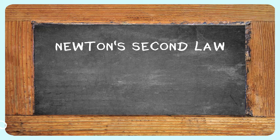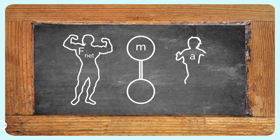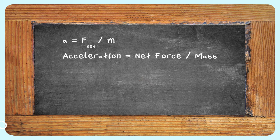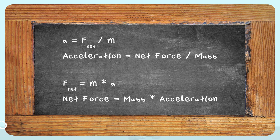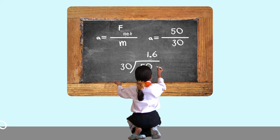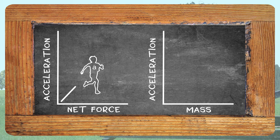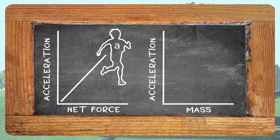Unlike your brother's rather unscientific demonstration, Newton's Law can be written as a mathematical formula. Combining the effects of net force, mass, and acceleration gives us: acceleration equals net force divided by mass, or net force equals mass times acceleration. You can use either of these formulas to find the missing variable in algebraic problem solving. In summary, Newton's Second Law states the acceleration of an object is directly proportional to the net force and inversely proportional to its mass.